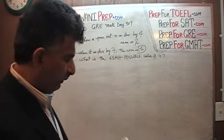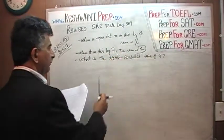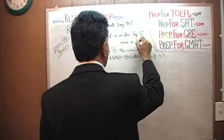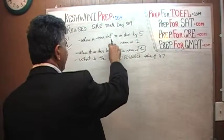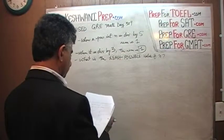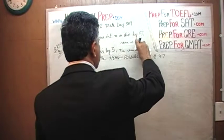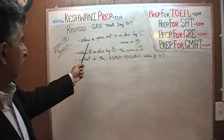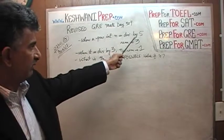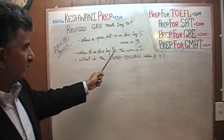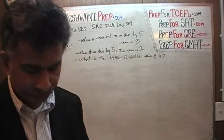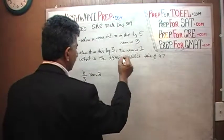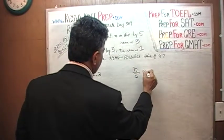It says: when a positive integer N is divided by 5, the remainder is 3. When it is divided by 3, the remainder is 1. What is the least possible value of N? So let's do it again. Now we know the procedure. N divided by 5 — we want a remainder of 3. And N divided by 3 — we want a remainder of 1.